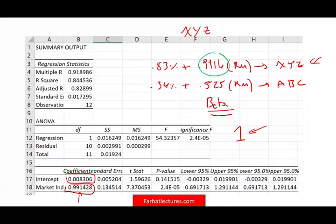So notice, XYZ is almost 1. XYZ beta is almost 1. It means, simply put, XYZ works almost directly with the market. So when the market goes up one point, XYZ goes up 0.99. When the market goes down one point, it goes down 0.99. So I would say XYZ has a greater systematic risk.